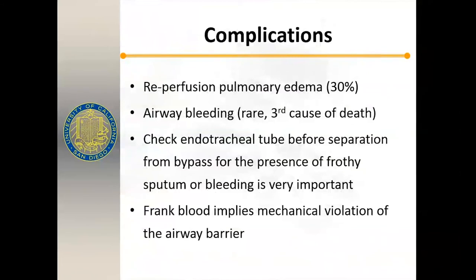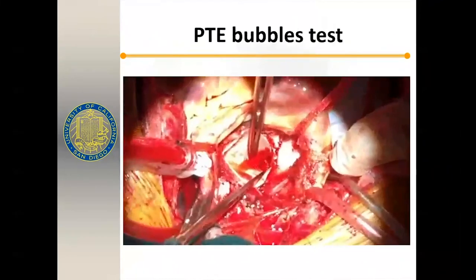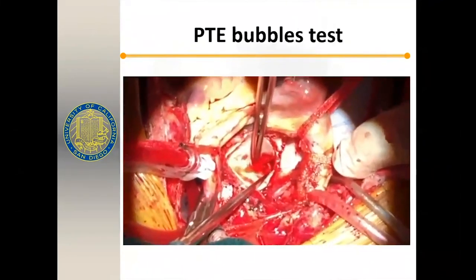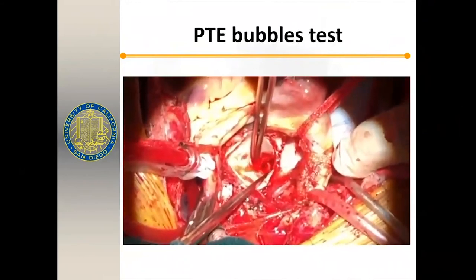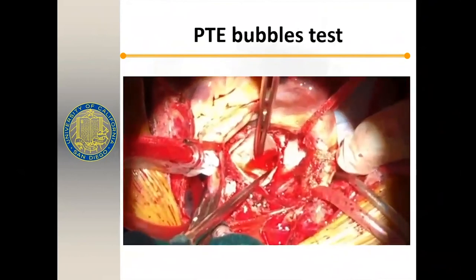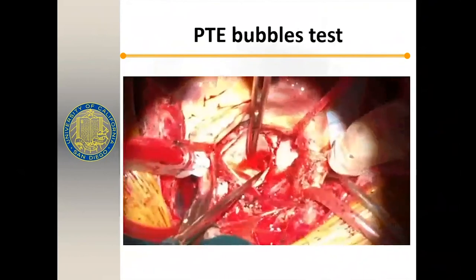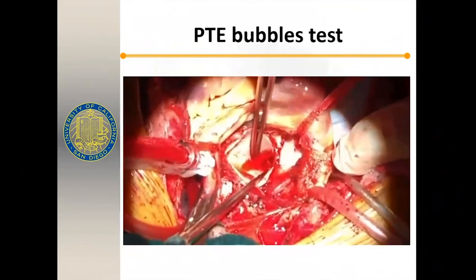Complications that can happen: reperfusion edema occurs in up to 30% of cases. Airway bleeding is not that common, but it's the third most common cause of death in these patients — very hard to manage because large volumes of blood can flood the airway, preventing adequate oxygenation. Frank blood implies a mechanical violation. The bubble test — giving a Valsalva while looking inside after going on bypass — reveals air coming into the pulmonary artery, confirming a breach in the vessel that must be controlled.